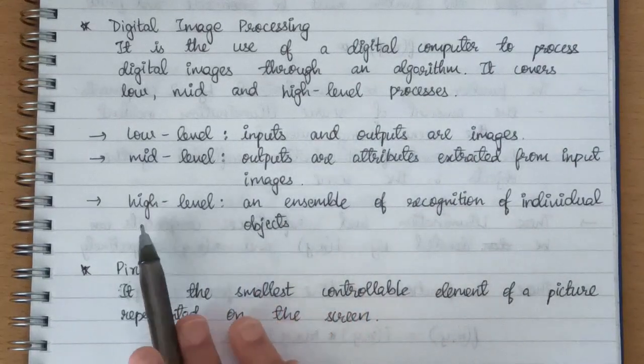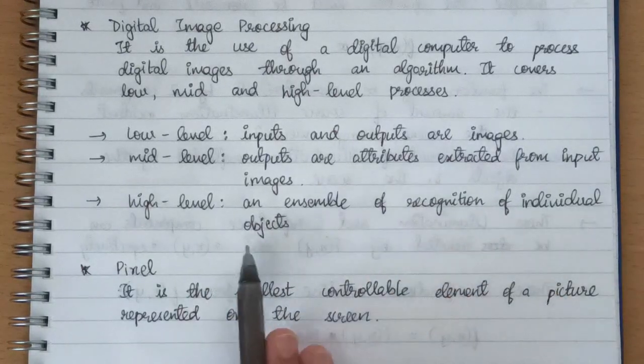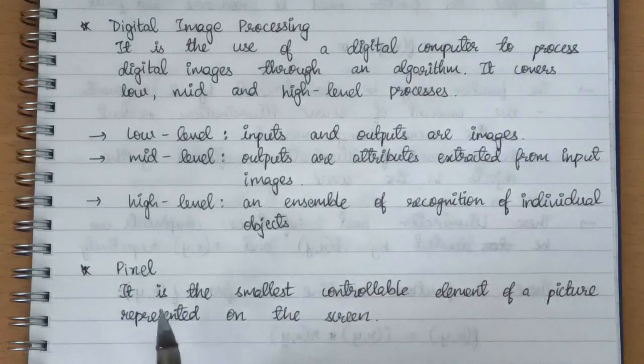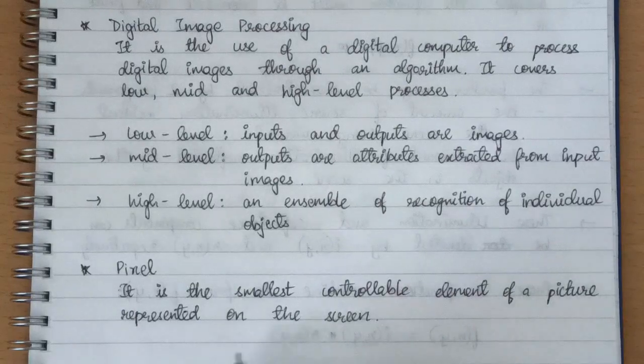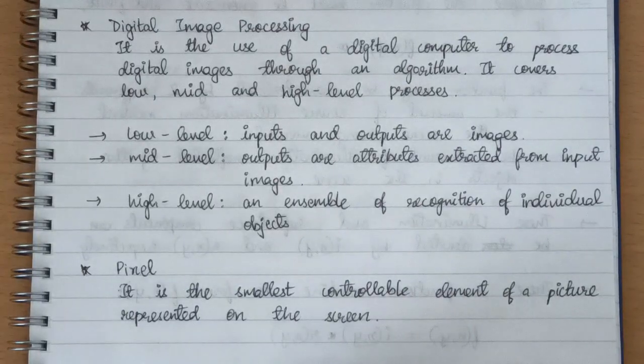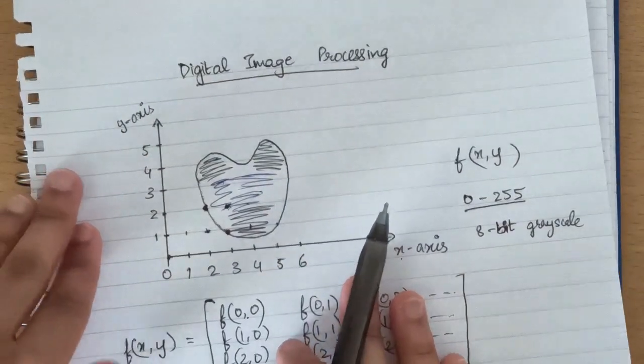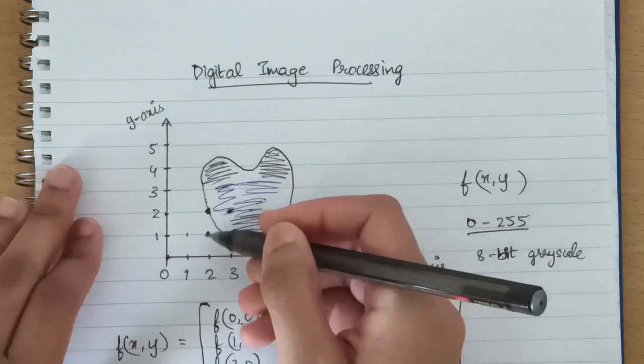So now what is a pixel? It is the smallest building block of a picture represented on the screen. You remember this image which we had? So here each of these points is a pixel.